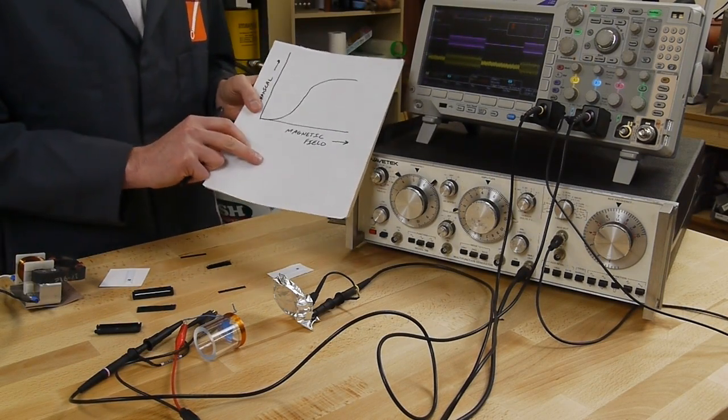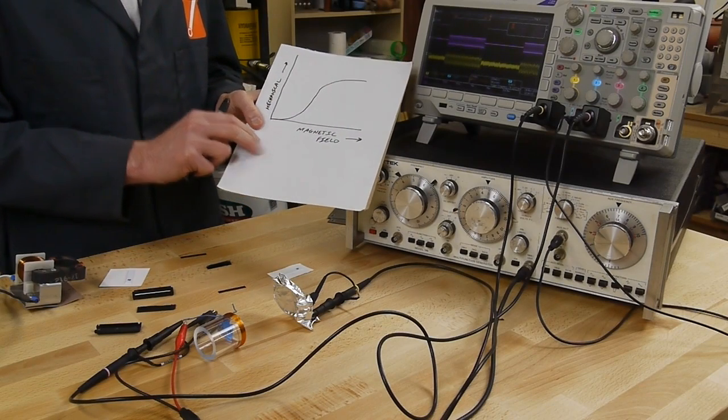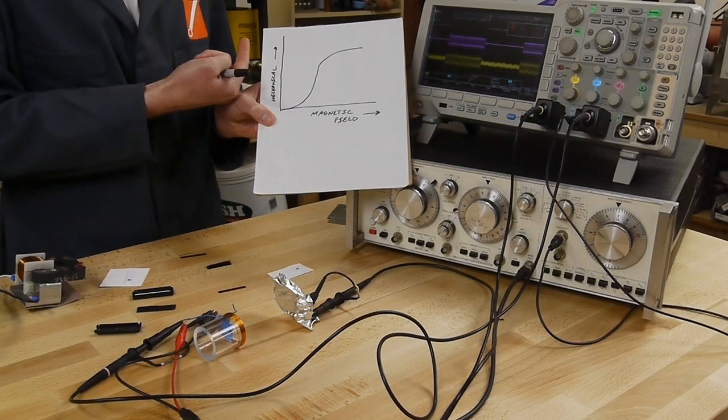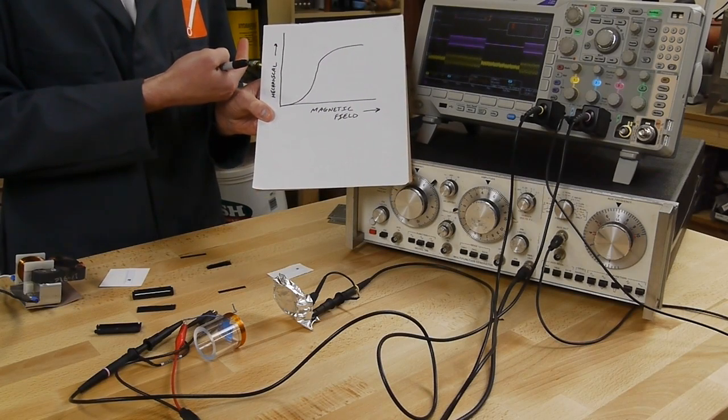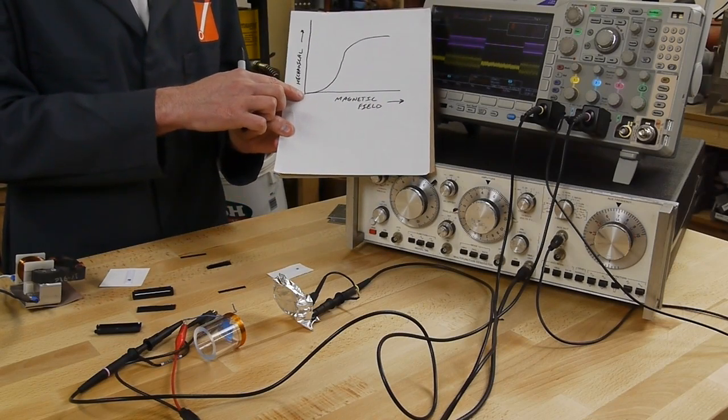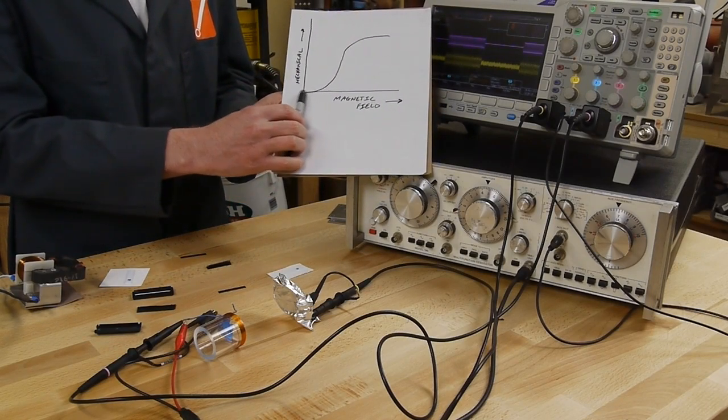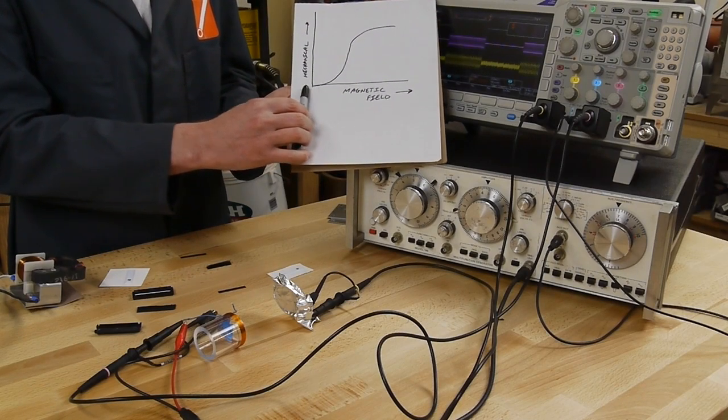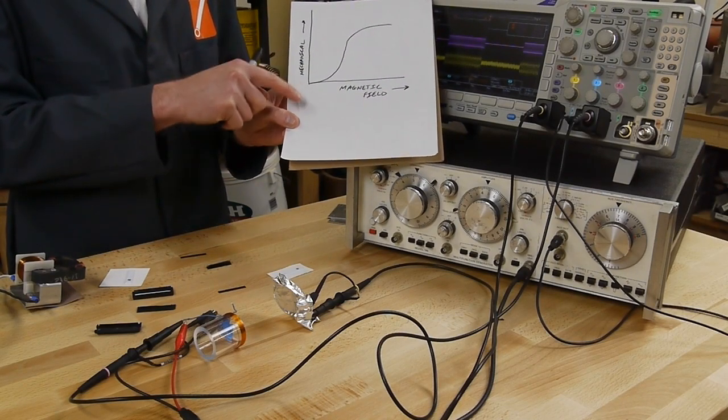The reason for this is that the response curve looks something like this. If we have increasing magnetic field strength this way and increasing mechanical output this way, the curve has this kind of S shape to it. If we're in almost no magnetic field, if we put an AC on top of this, the AC field is kind of going back and forth like this, but we're not getting much mechanical movement out of it because down near zero this curve is very flat.